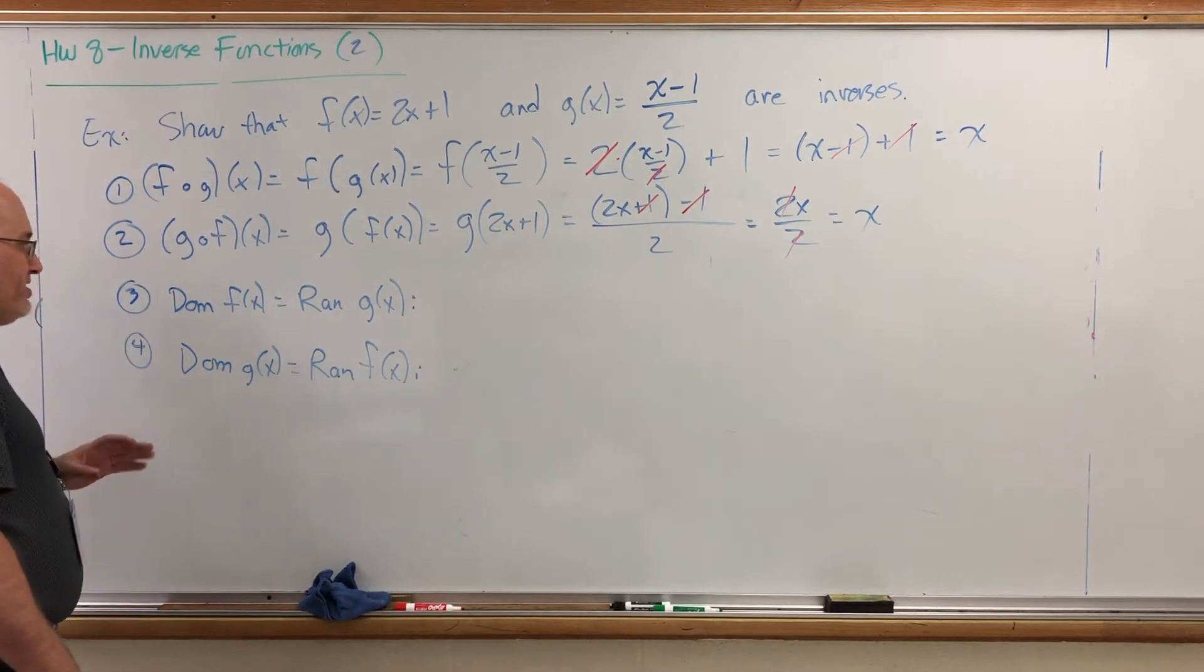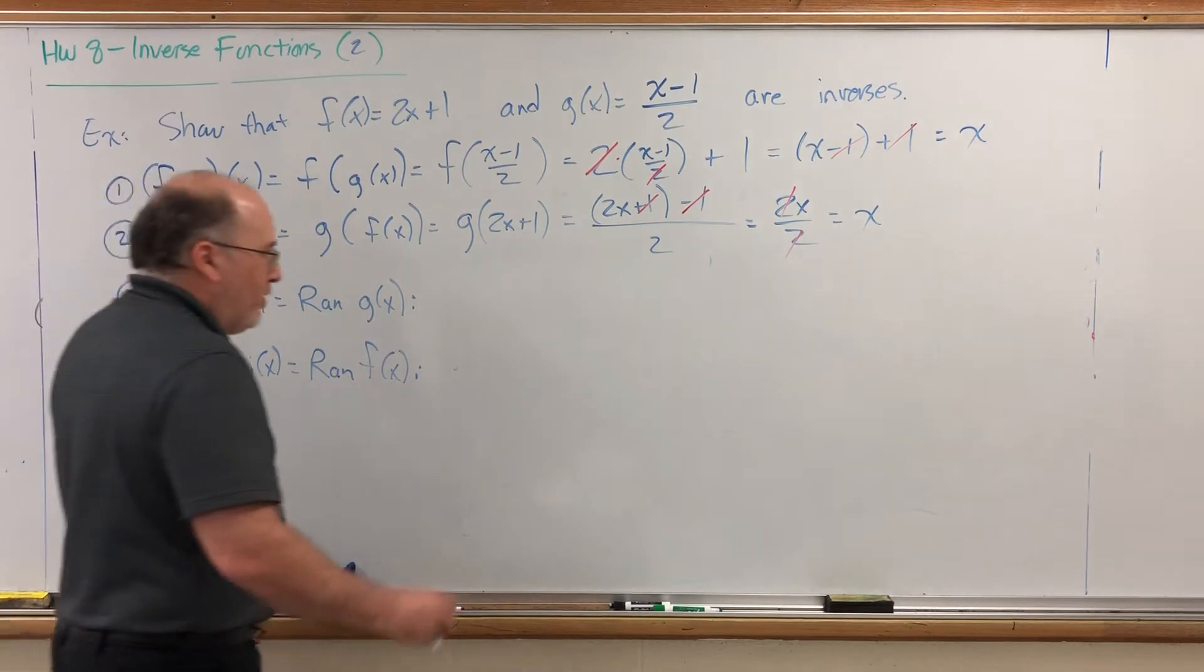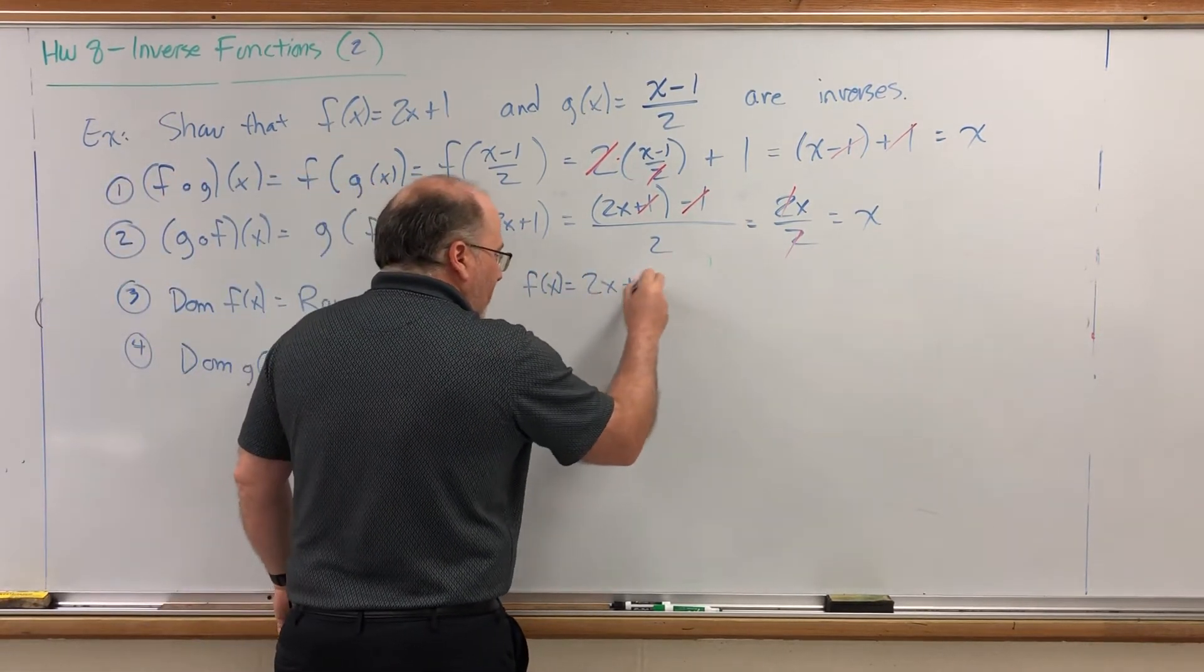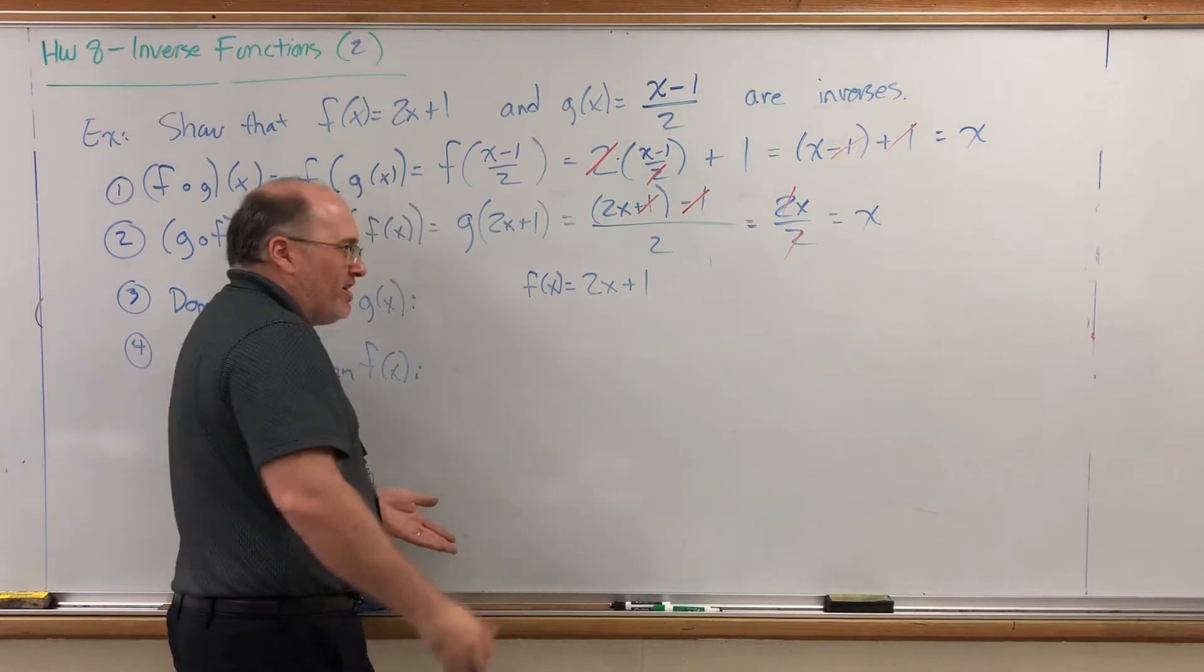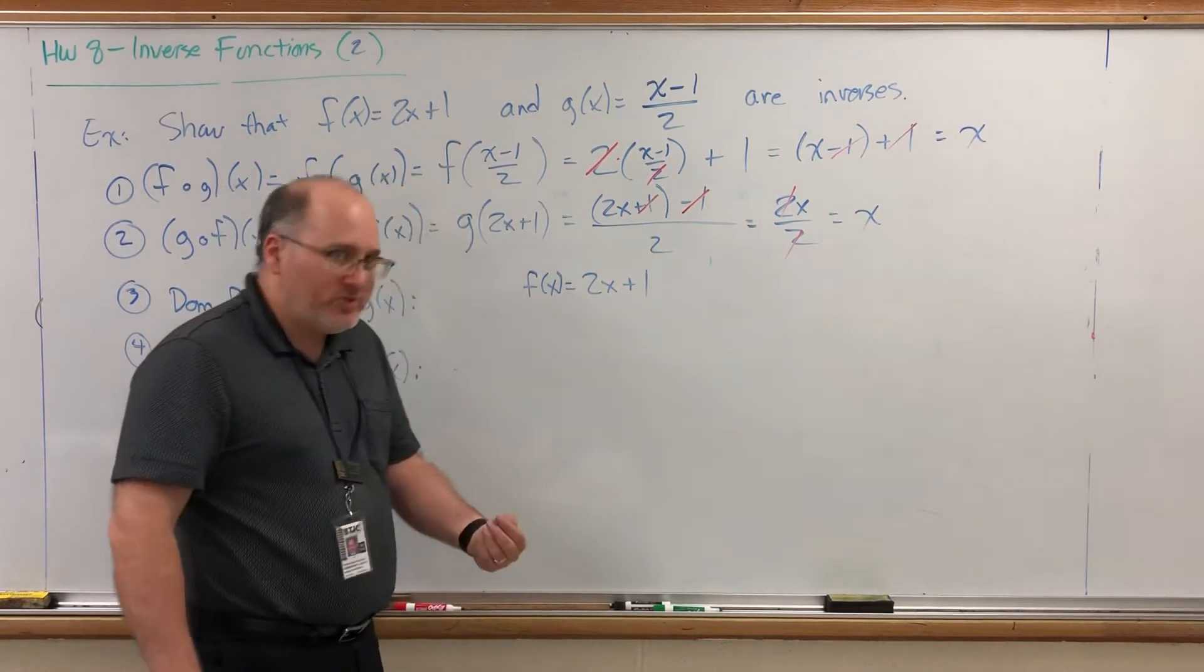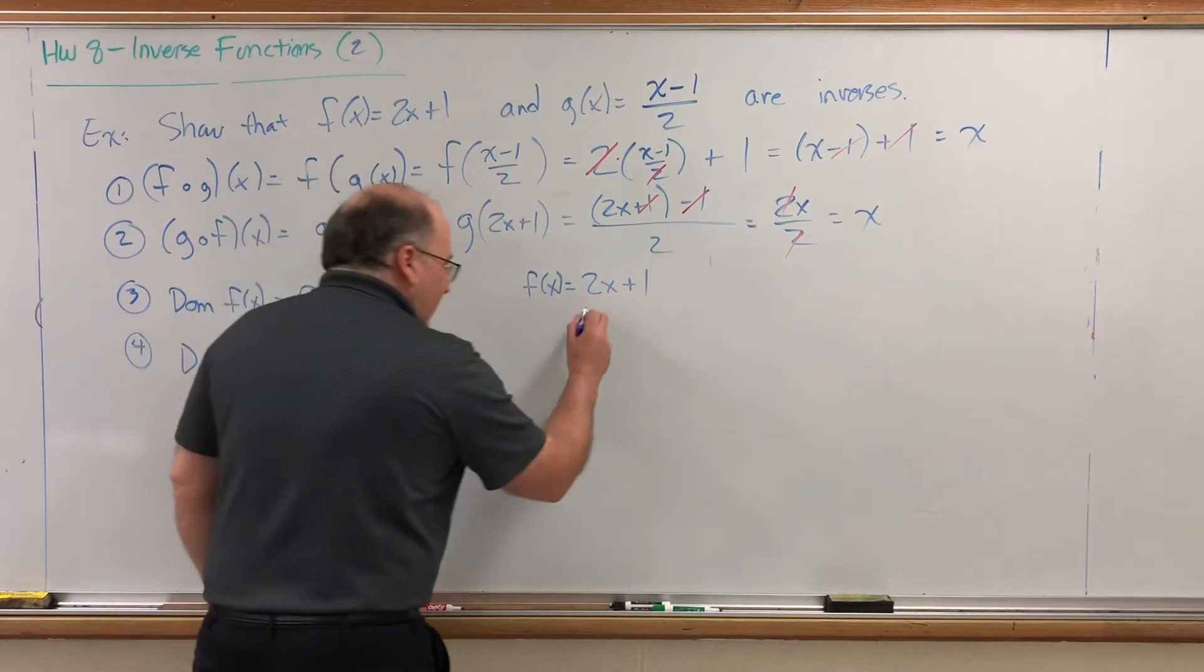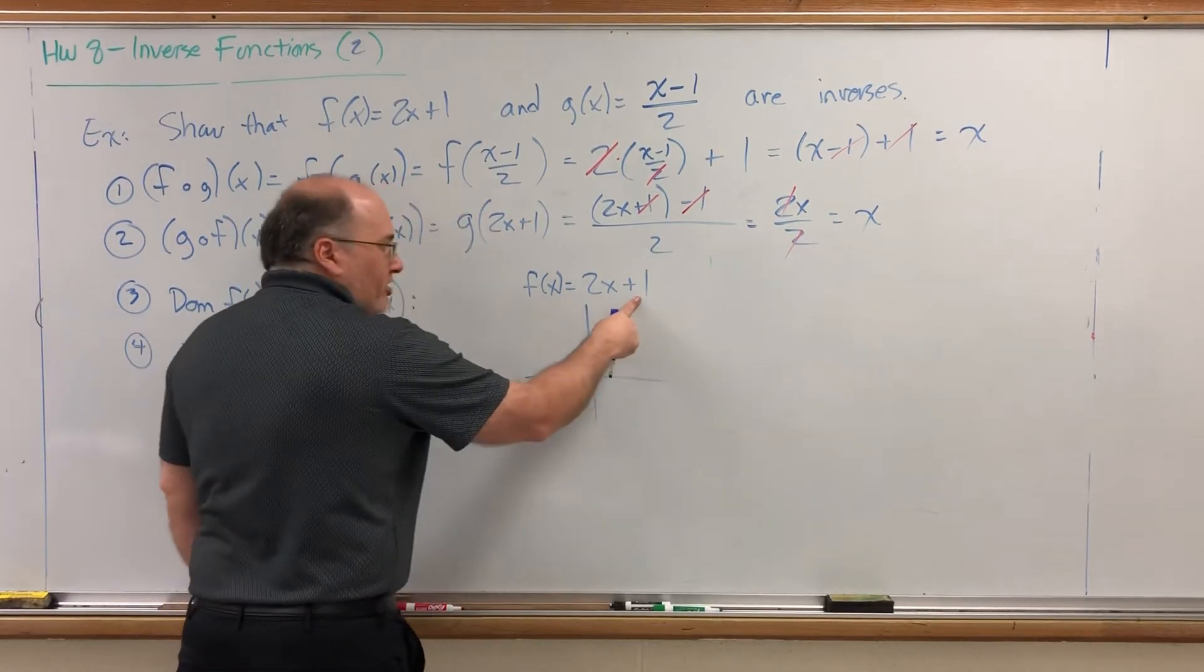So in order to pull the domain and range off of both of these functions, let's graph both of them. Starting with f of x equals 2x plus 1. We can graph this by cranking out values, but if you were paying attention to previous work, this is in slope-intercept form, and I can capitalize on that. The y-intercept is 1.